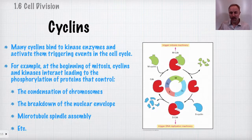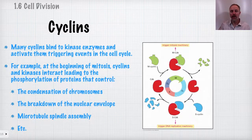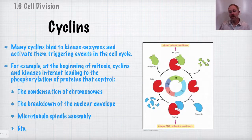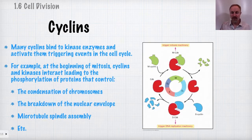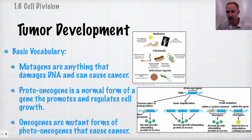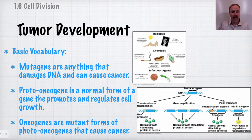Examples of cyclin-kinase actions include signaling chromosome condensation after replication, breaking down the nuclear envelope, and assembling the microtubule spindle to separate sister chromatids. If the cell cycle goes awry, this is when we get tumor development.